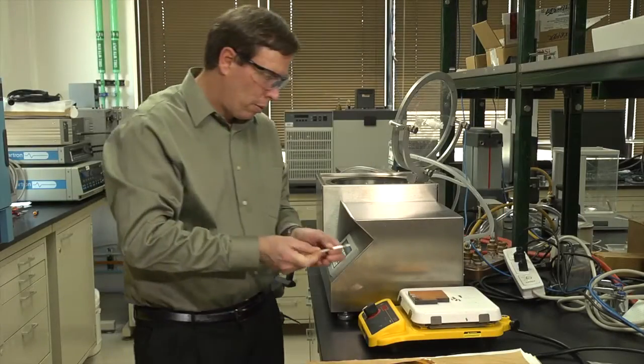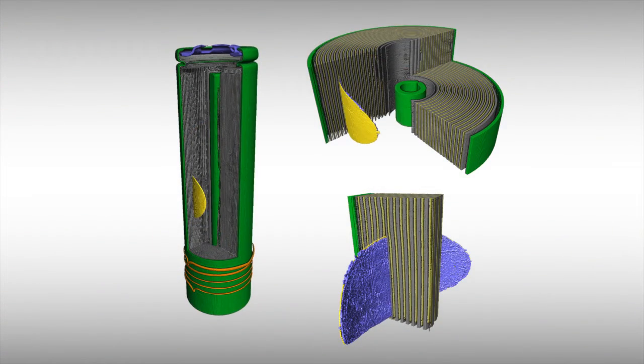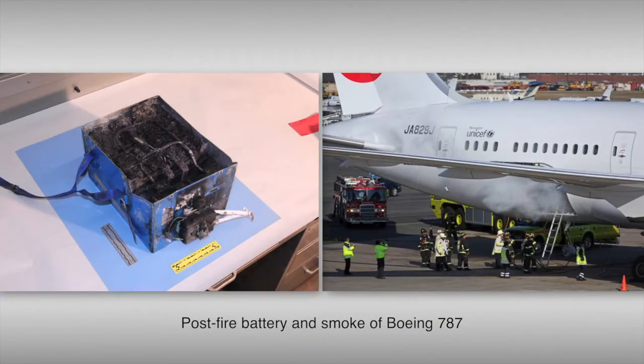The battery internal short circuit device is a device that's implanted into a battery. Once we figure out what happens inside the battery, hopefully what we can do is design new safety measures to ensure that the battery itself does not go into thermal runaway.